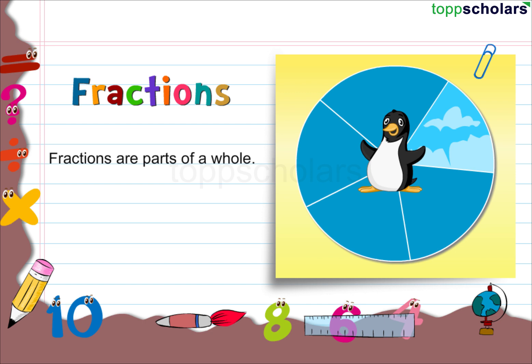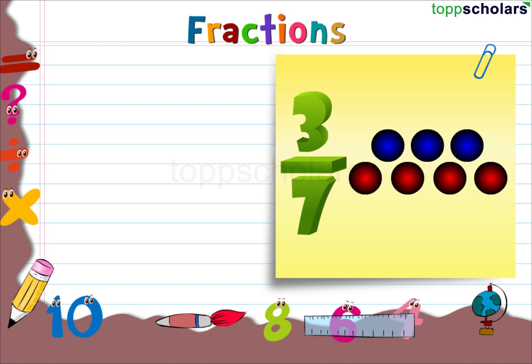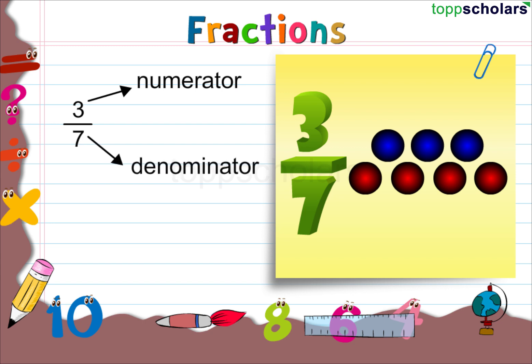Fractions are parts of a whole. Look at the fraction 3 by 7. The number written at the top is called the numerator. The number written at the bottom is called the denominator. We read this as 3 sevenths.